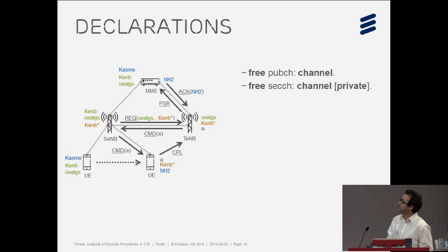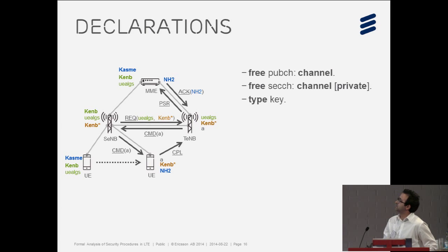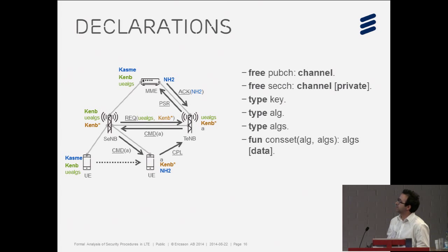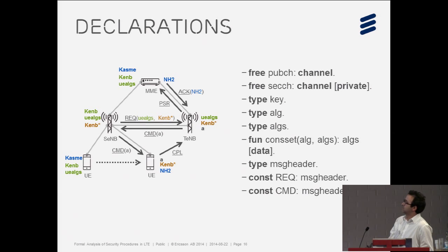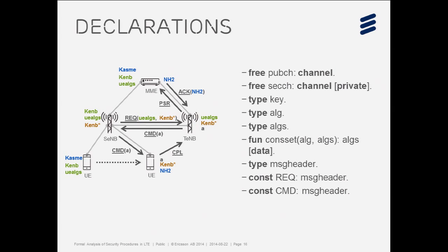In the declaration part of this model, we need some declarations related to channels to model the communication medium. We need a key type to model all keys involved, an alg and algorithm set type with functions to construct such sets in order to model the UE algs. We also need a message header type and constants to model all messages in this procedure — using such tags restricts possible behaviors and increases chances of termination in ProVerif. Additionally, we need function declarations to handle encryption, hashing, and whatever is required.